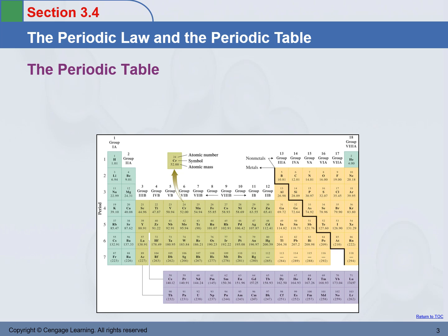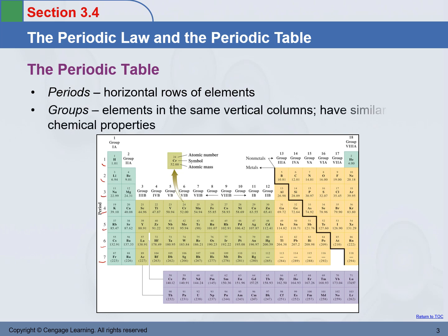Now let's come back to look at the periodic table. Each horizontal row is called a period. Right now we have seven periods in the current table. Each vertical column is called a group. Elements in the same group or in the same column have similar chemical properties.